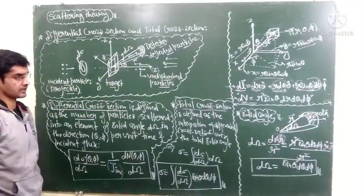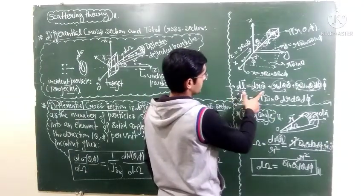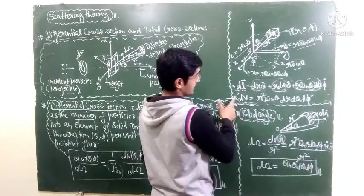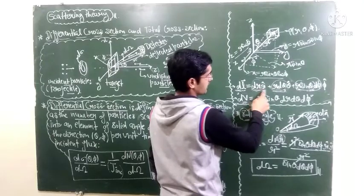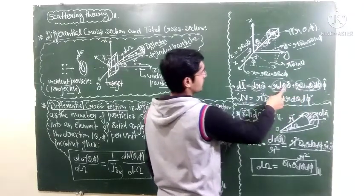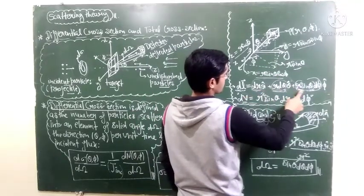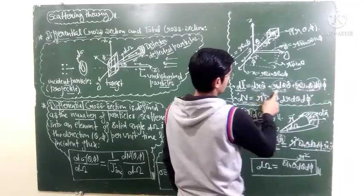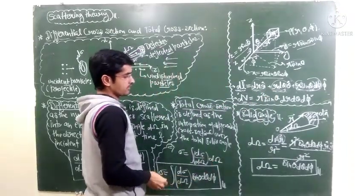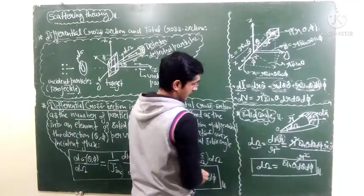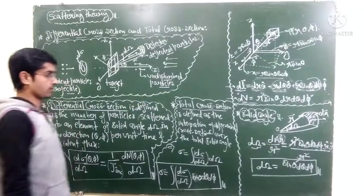To summarize the important relations: the volume element is r² sinθ dr dθ dφ, the line element has three components, and the infinitesimal area element in the r-direction is obtained by taking the cross product of the theta and phi terms. Similarly, the area in the theta-direction uses the cross product of the r and phi terms, and in the phi-direction the cross product of the r and theta terms. The solid angle is sinθ dθ dφ.